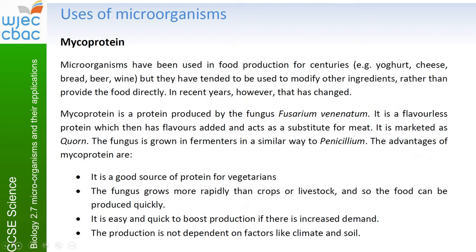Microorganisms have been used for food production for centuries — in making things like yoghurt, cheese, bread, beer and wine — but they've tended to be used to modify other ingredients rather than provide food directly. In recent years that has changed. Mycoprotein is a protein produced by the fungus Fusarium venenatum — this is the species used to make something like Quorn. Quorn is a brand name, and there are plenty of other versions of mycoprotein available.